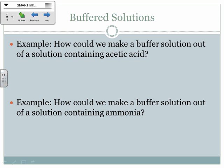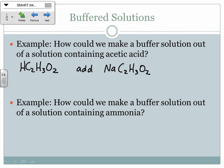How could we make a buffer solution out of a solution containing acetic acid? You can just add NaC₂H₃O₂. It doesn't have to be sodium acetate, but that's a very common one. If you add this to it, then you've got that acid-conjugate-base pair, and that's a good buffer solution.